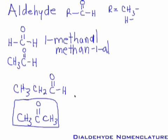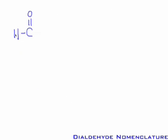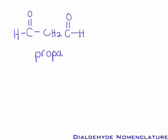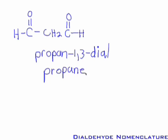If you have two aldehydes on a carbon chain, the only way is to have one at each end. When that occurs, we use the full alkane root, just like we did for alcohols and amines. A three-carbon chain becomes propane, and since the aldehydes are at 1 and 3, this is propane-1,3-dial. Simply saying propanedial is also acceptable. Notice the E on propane is dropped in front of the hyphen because it is a silent vowel.